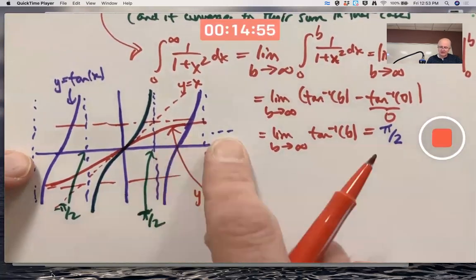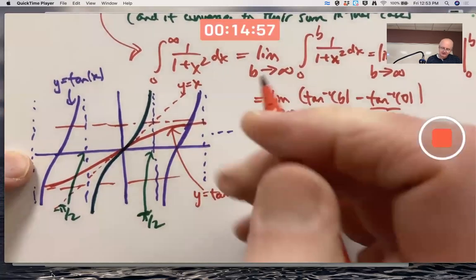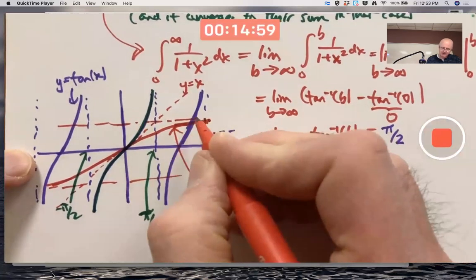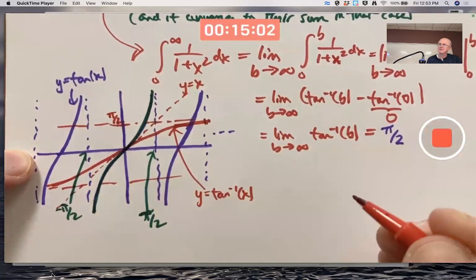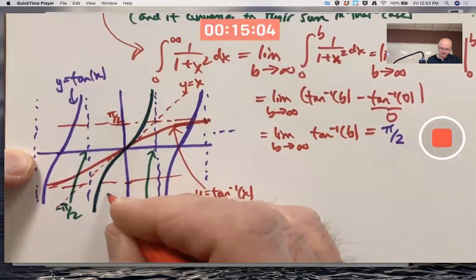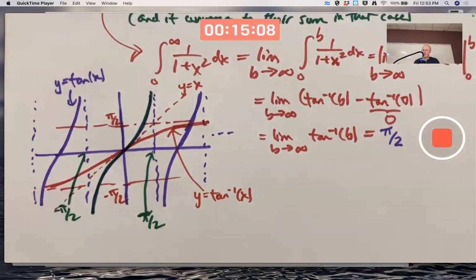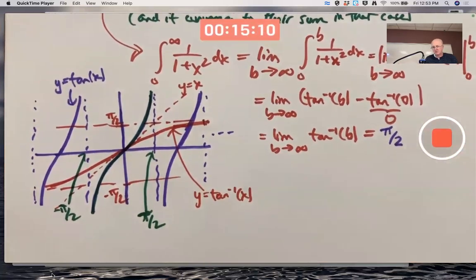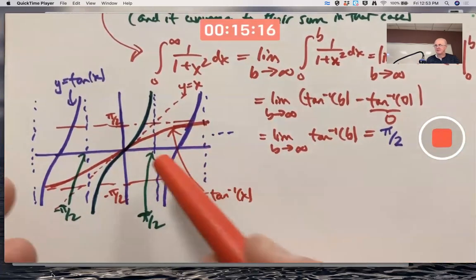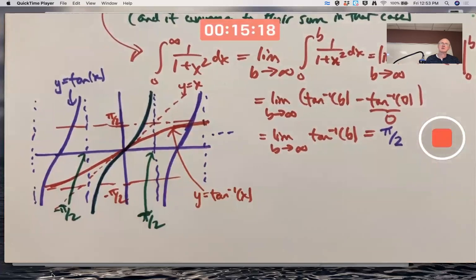And yeah, as the input goes to plus infinity, the function approaches the horizontal asymptote up there, which is at pi over 2. The one down here is at negative pi over 2. That's a graphical reason why the answer is pi over 2. But you've got to know some things. You've got to know what the graph of the tangent function looks like, what's its domain of the piece that we invert for the inverse tangent function.